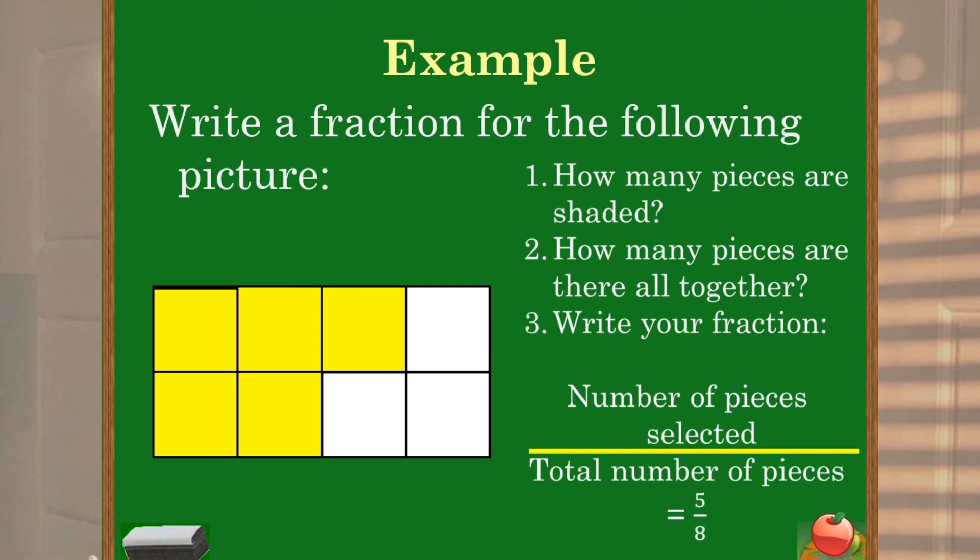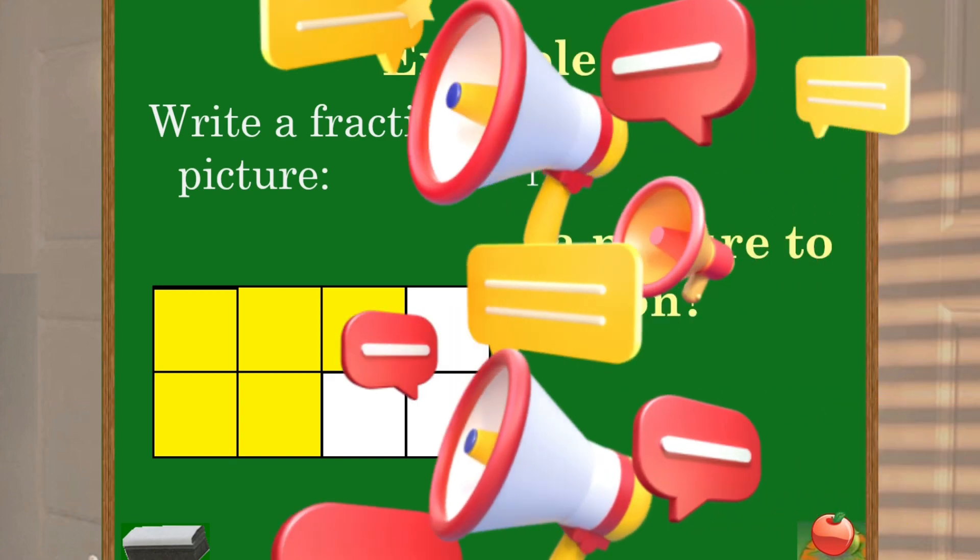And how many pieces are there altogether? That goes in the denominator. That means the total number of pieces are 8. So our fraction is 5 over 8 and we write it as 5 eighths.